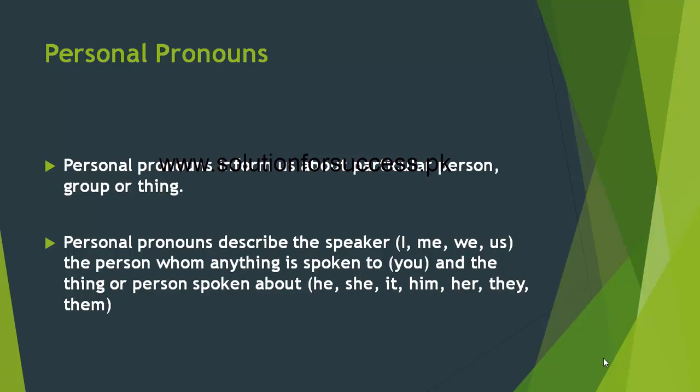Personal pronouns ہمیں speaker کے بارے میں بتاتے ہیں۔ Speaker کے لیے personal pronouns I, me, we, us کا استعمال ہوتا ہے۔ وہ شخص جس کے ساتھ بات کی جا رہی ہو اس کے لیے you کا استعمال ہوتا ہے۔ اور جس شخص یا چیز کے بارے میں بات کی جا رہی ہو اس کے لیے he, she, it, him, her, they, them کے personal pronouns استعمال ہوتے ہیں۔